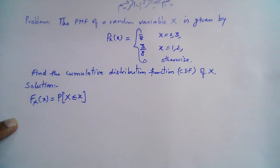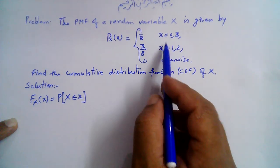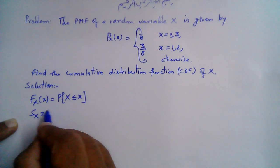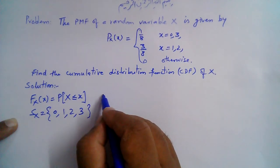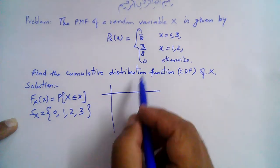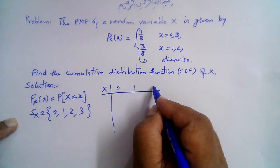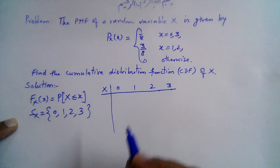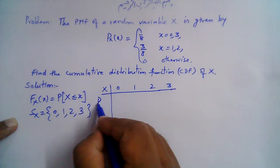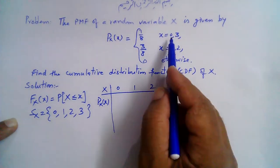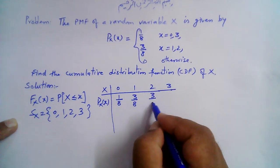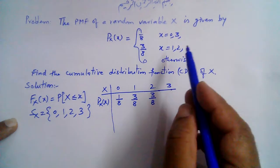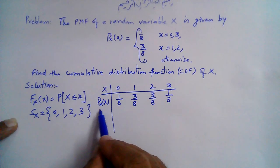From the PMF, we can see that the range of the random variable X is {0, 1, 2, 3}. Writing this in tabular form: X takes values 0, 1, 2, 3 with probabilities 1/8, 3/8, 3/8, and 1/8 respectively. This is the probability distribution of our given random variable.